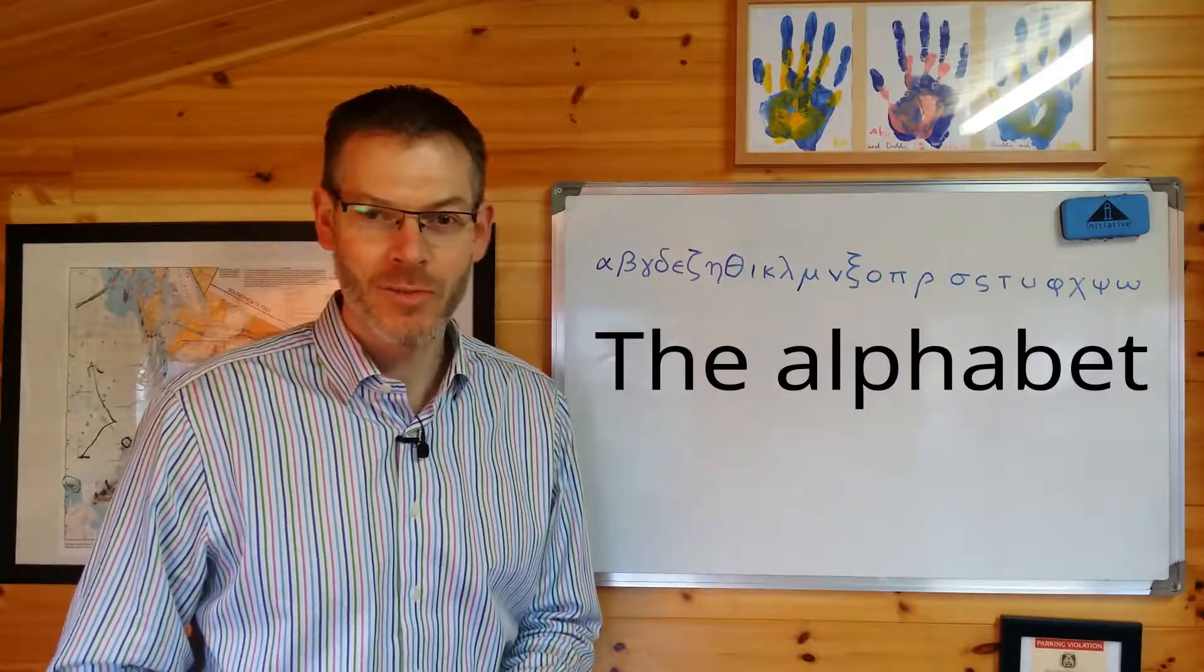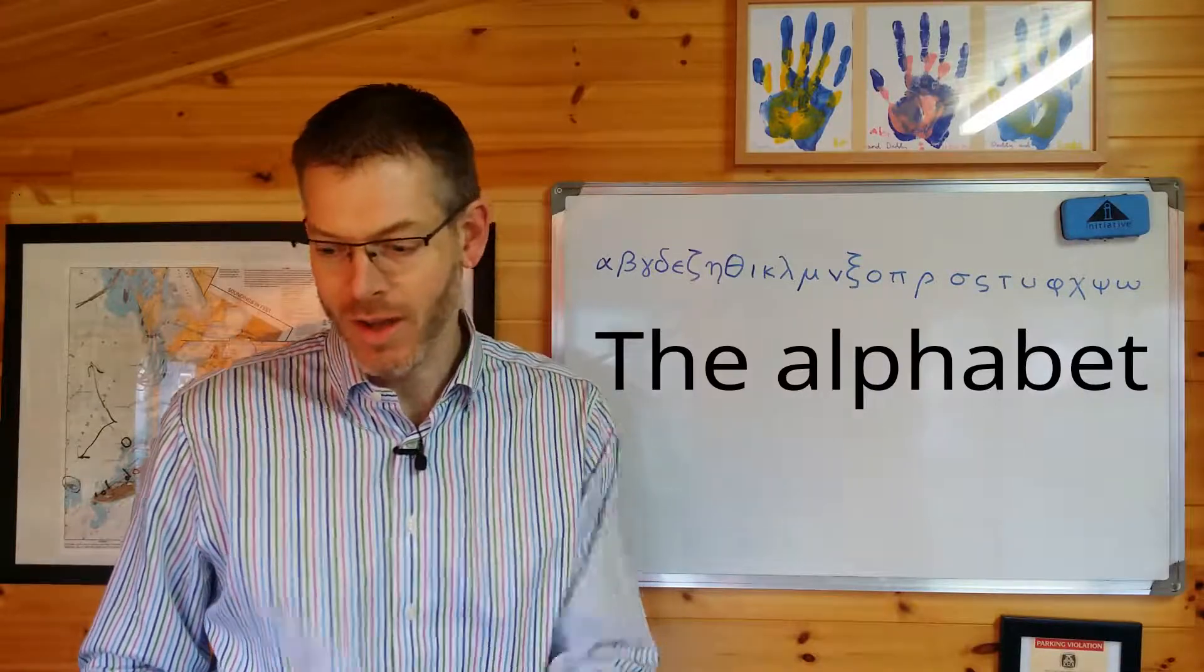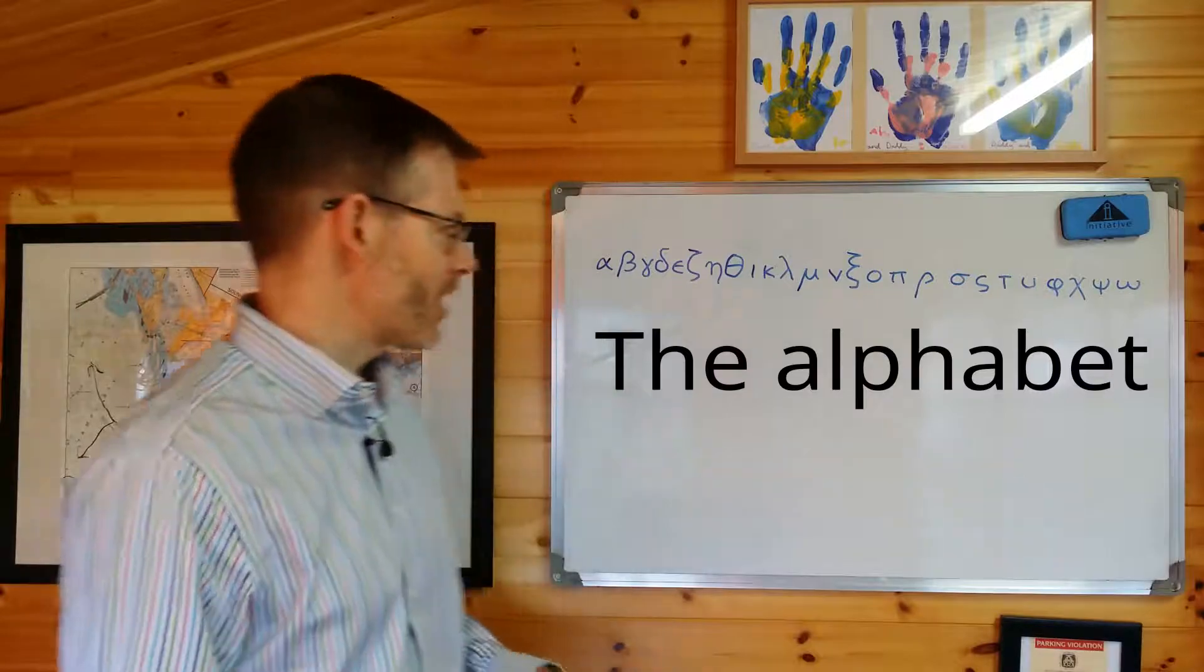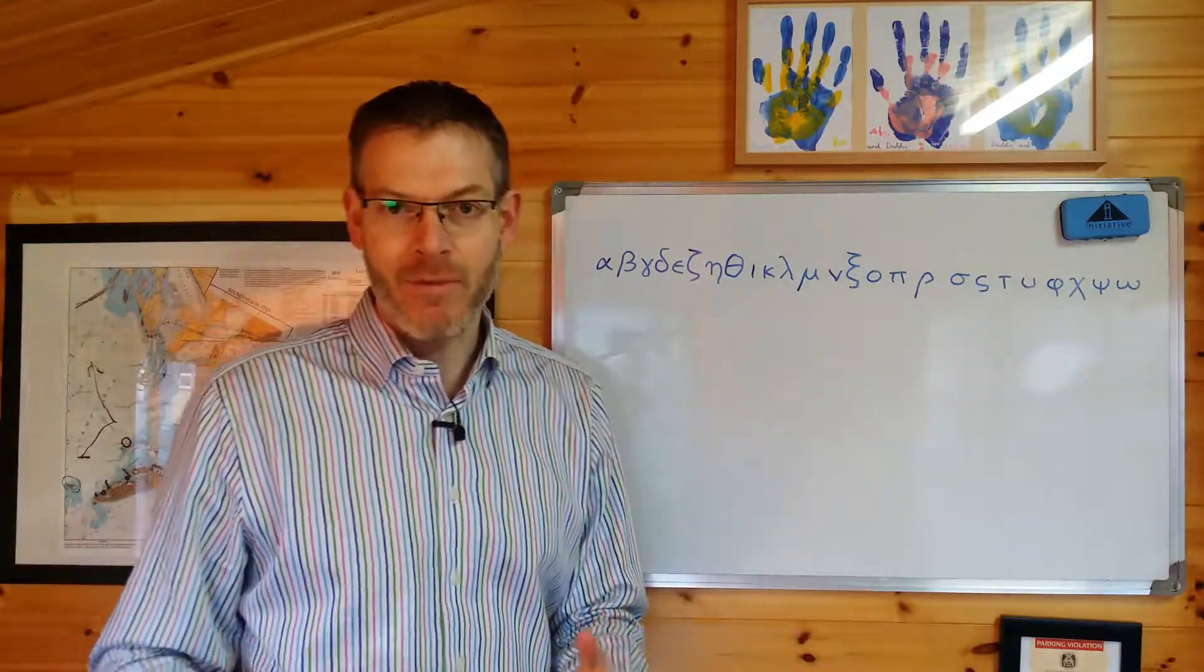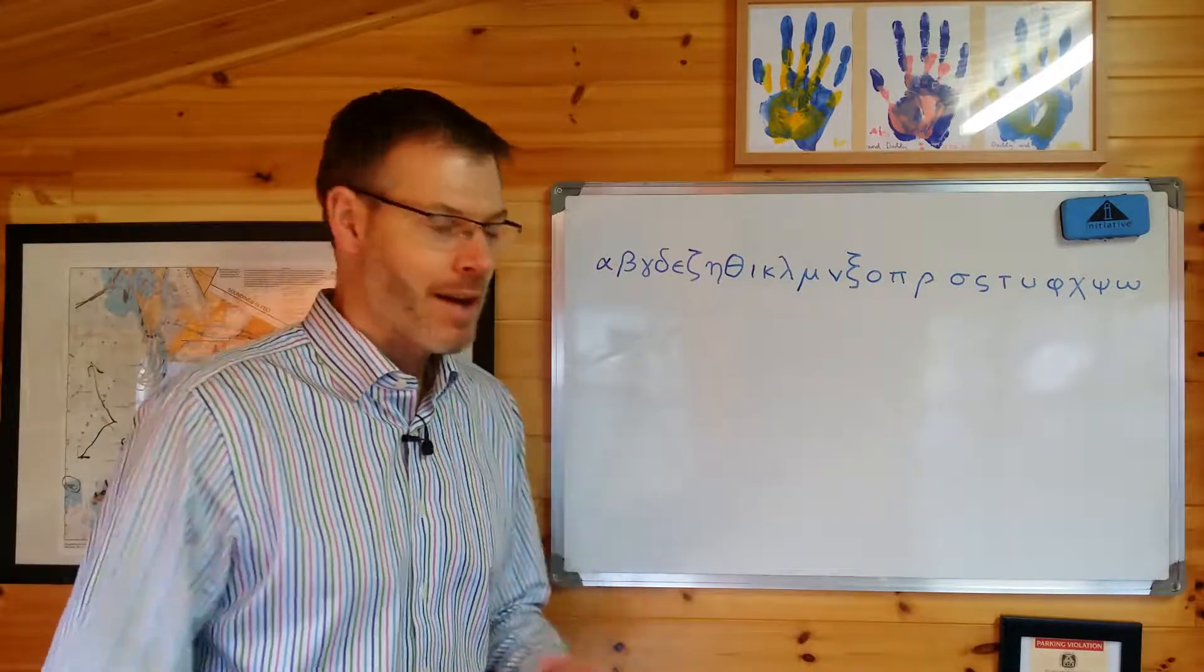Hi, welcome to lesson one. We're looking at Jeremy Duff's Elements of New Testament Greek, chapter one, section 1.1, page 12, where you've got a table which includes the Greek alphabet and the corresponding letters in the English alphabet, the Roman alphabet really.